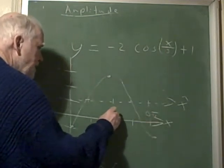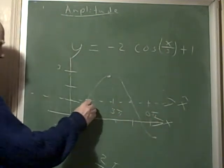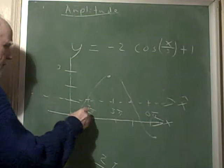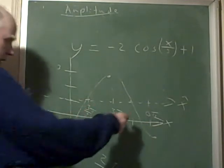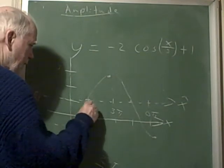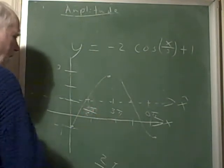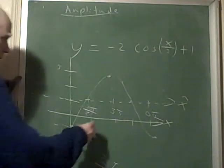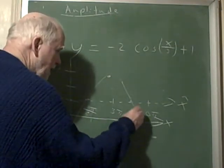And this is 3 pi, and this is 3 pi over 2, and this is 9 pi over 2. I'm sorry, did I get that right? 3 pi over 2, and then 9 pi over 2, that's what this one is.